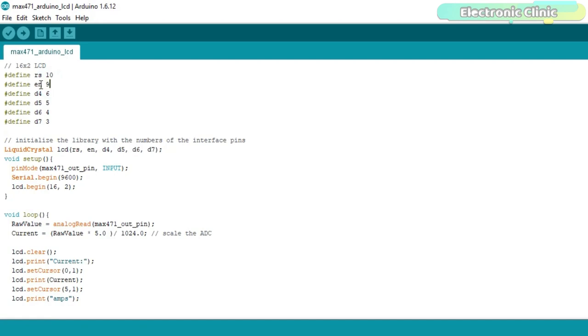The enable pin of the LCD module is connected with the Arduino's pin number 9 while the data pins D4 to D7 are connected with the Arduino's pin number 6, 5, 4 and 3.